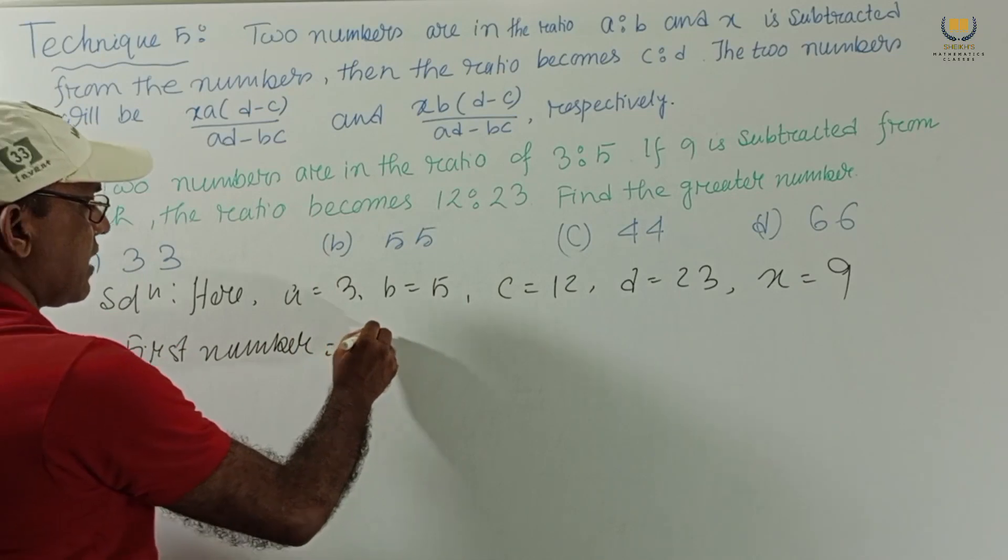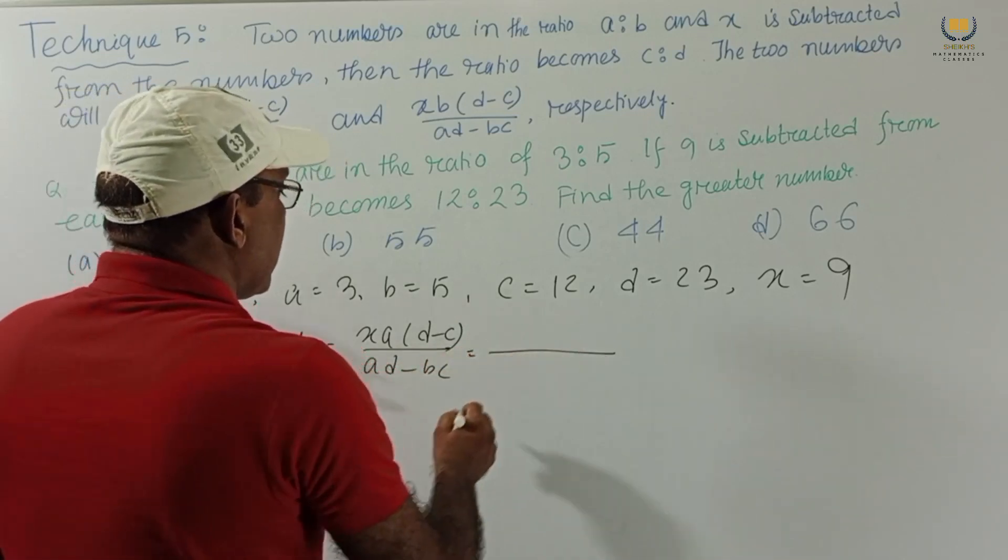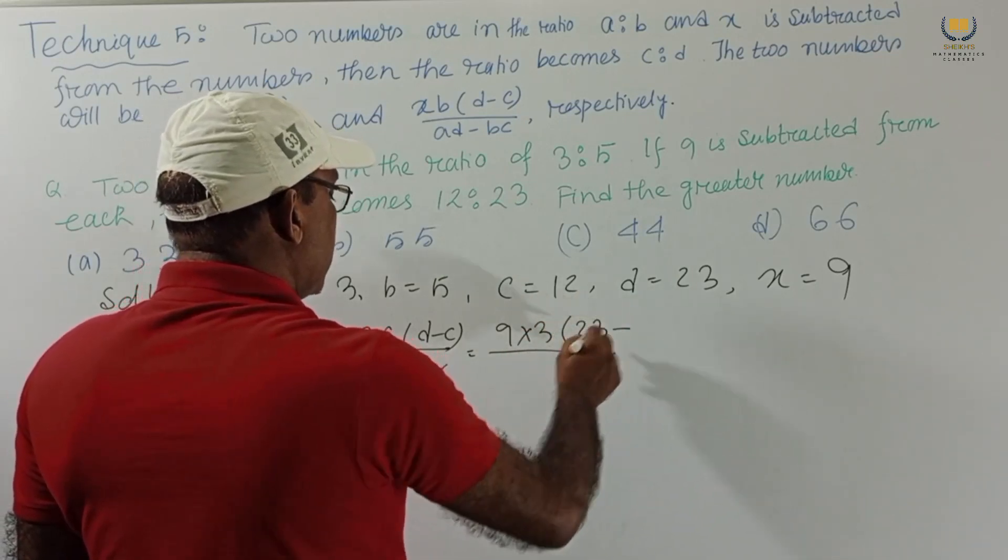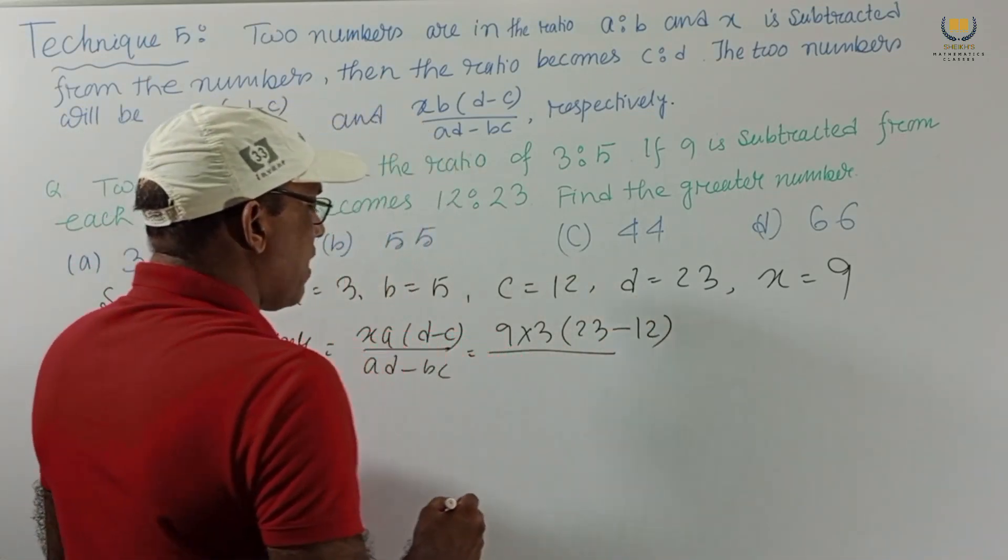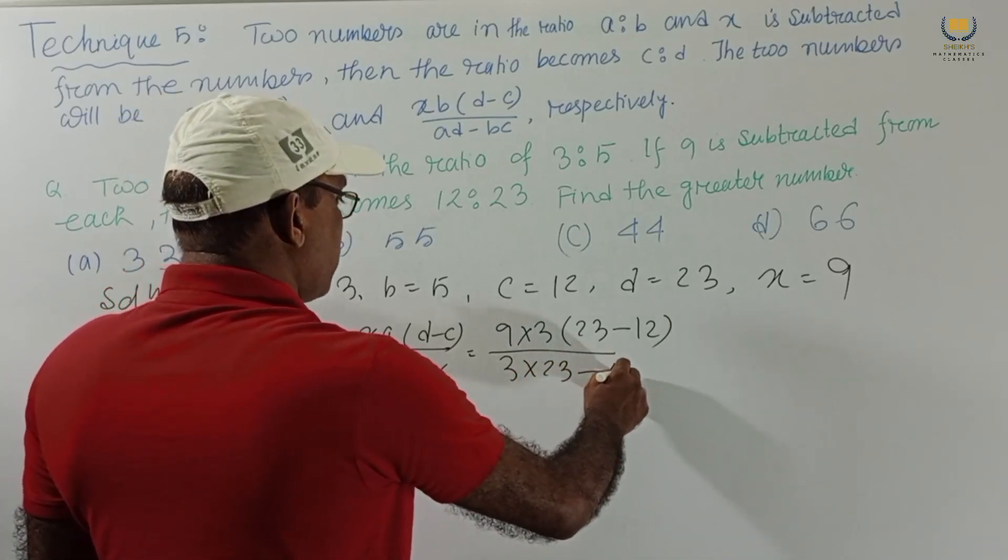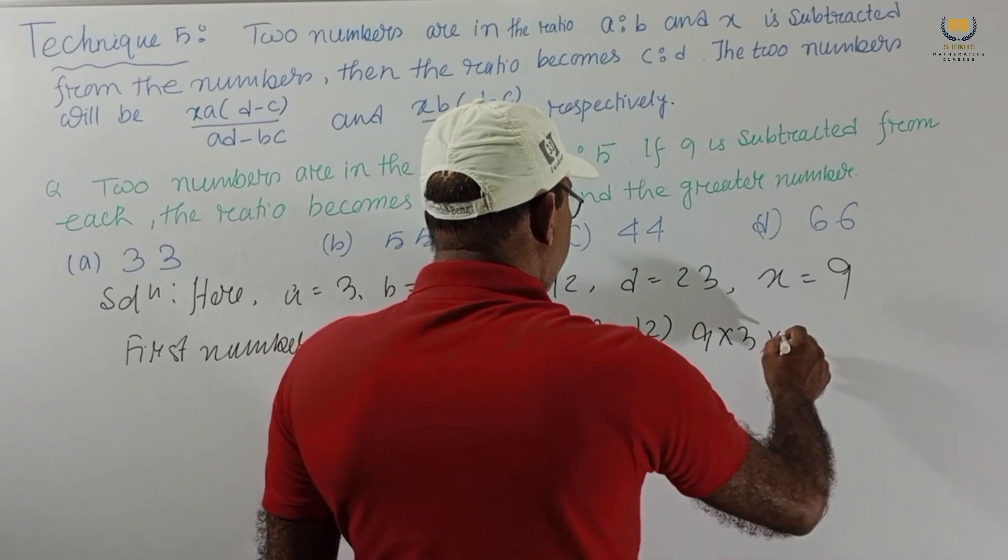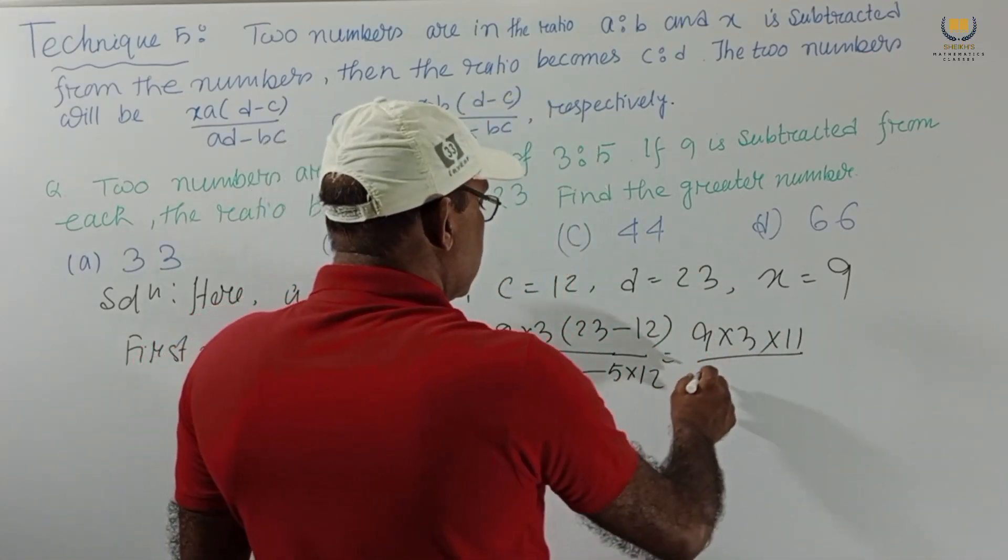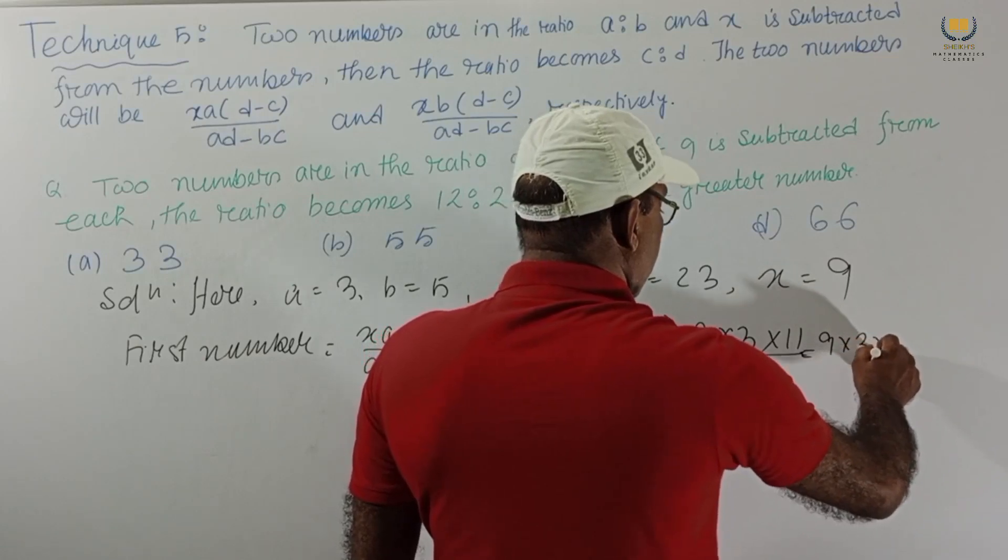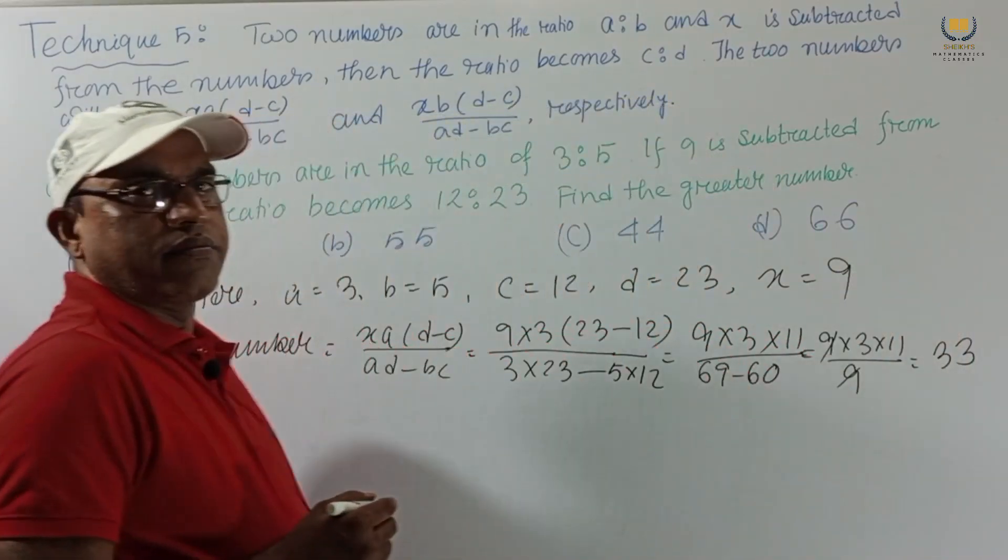First number is x(ad-c)/(ad-bc). x means 9, a means 3, d means 23 and c means 12, divided by 3 into 23 minus 5 into 12. This is 9 into 3 into 11 by 69 minus 60. 9 into 3 into 11 by 9, cancel we get 33. First number is 33.